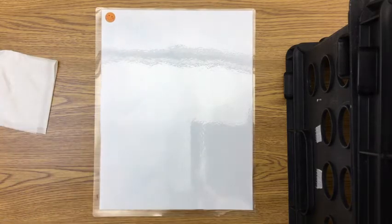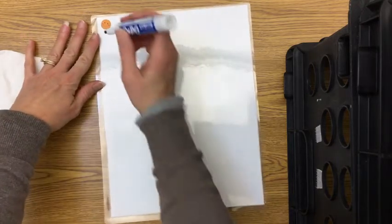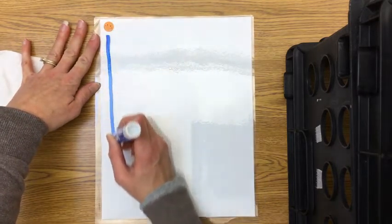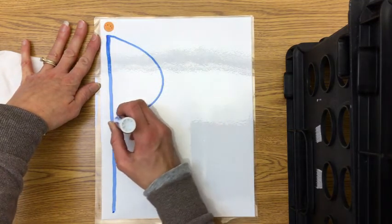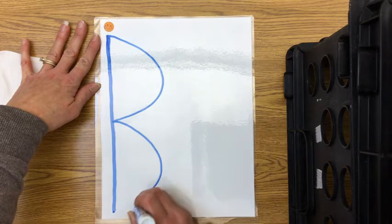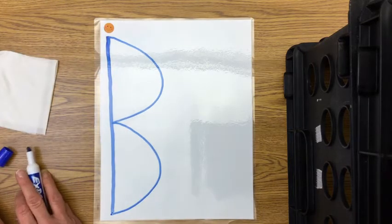We always start our letters at the top. We're going to do a big line down, hop to the top, a little curve to the middle, a little curve to the bottom to write the letter B.